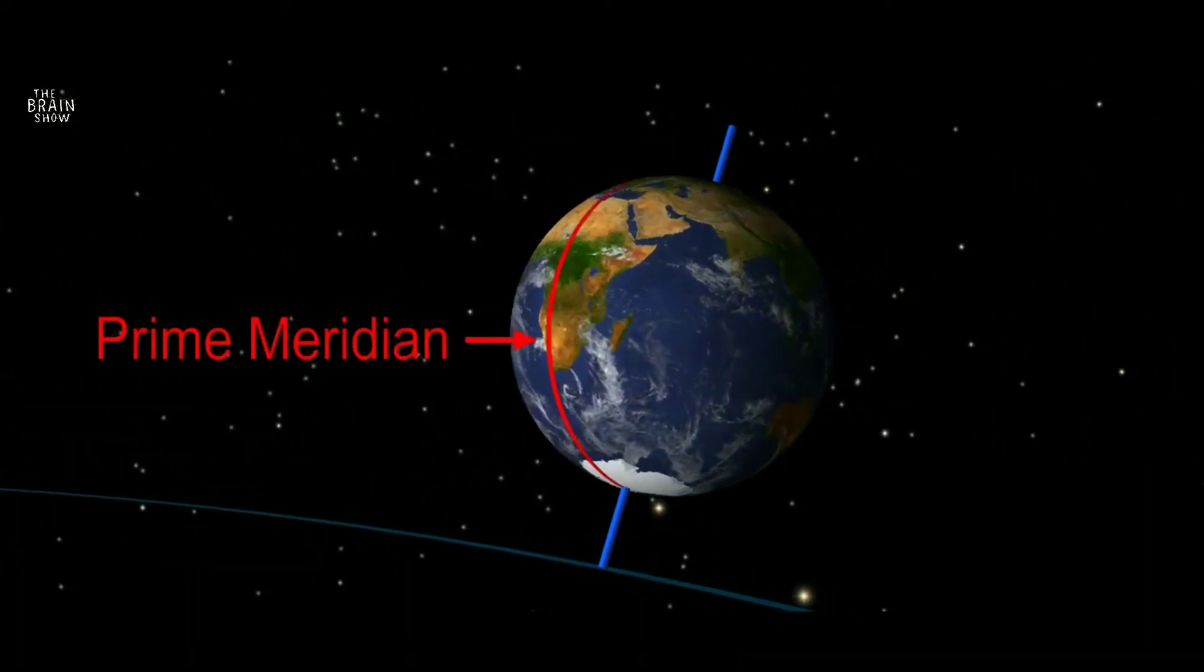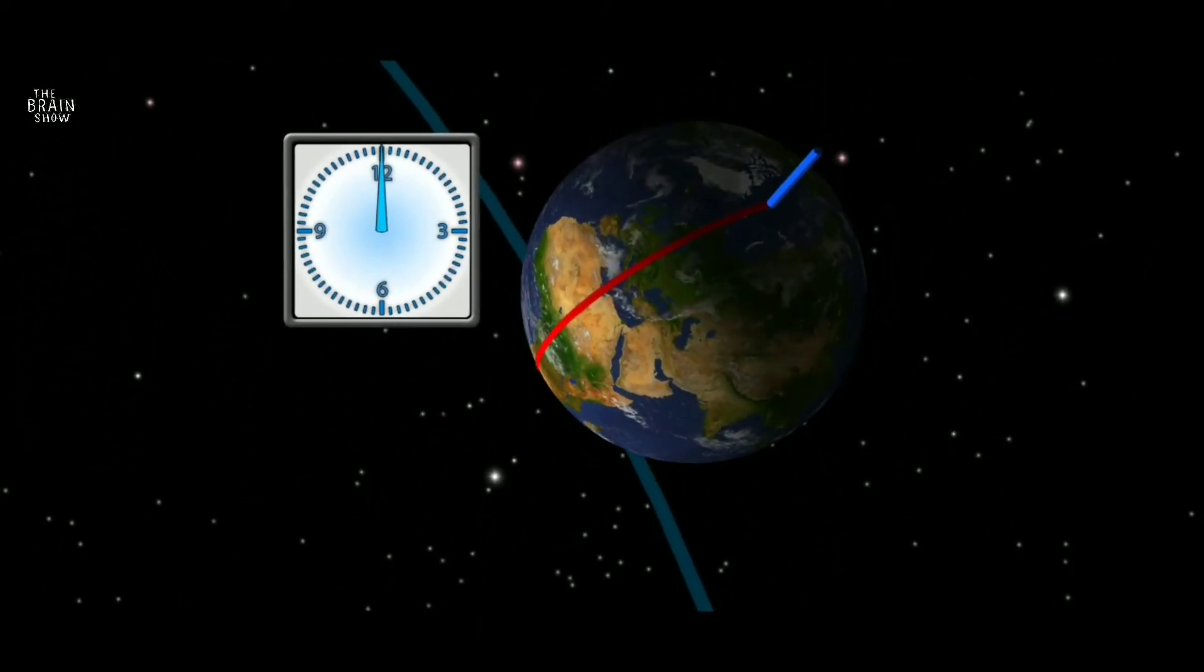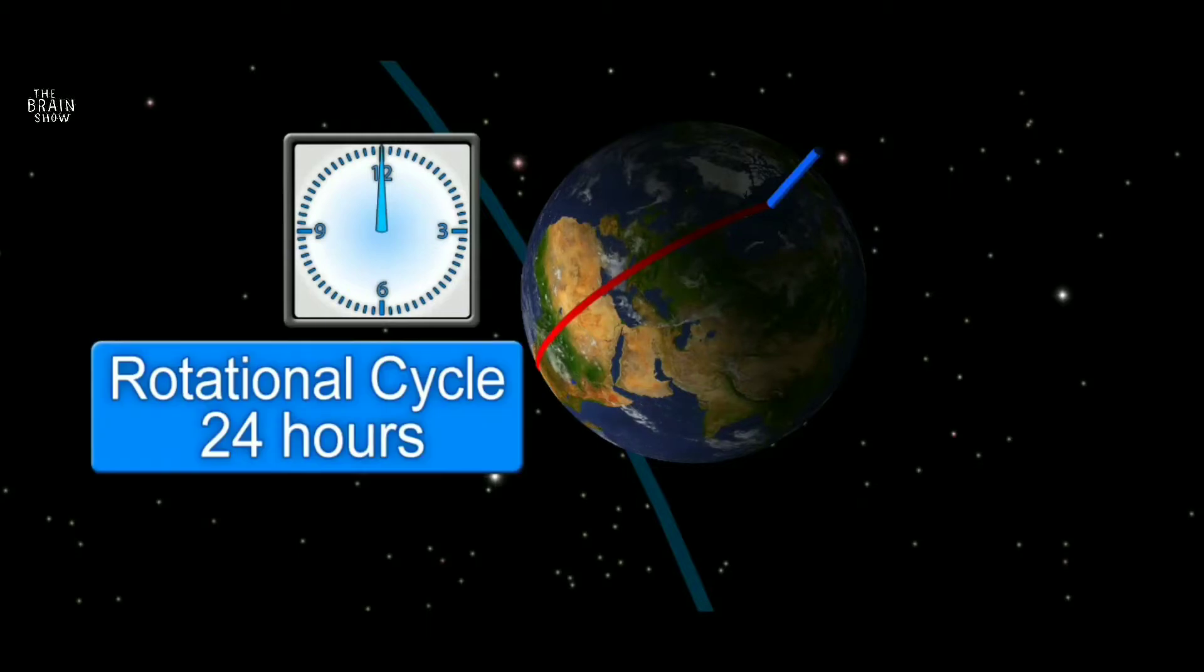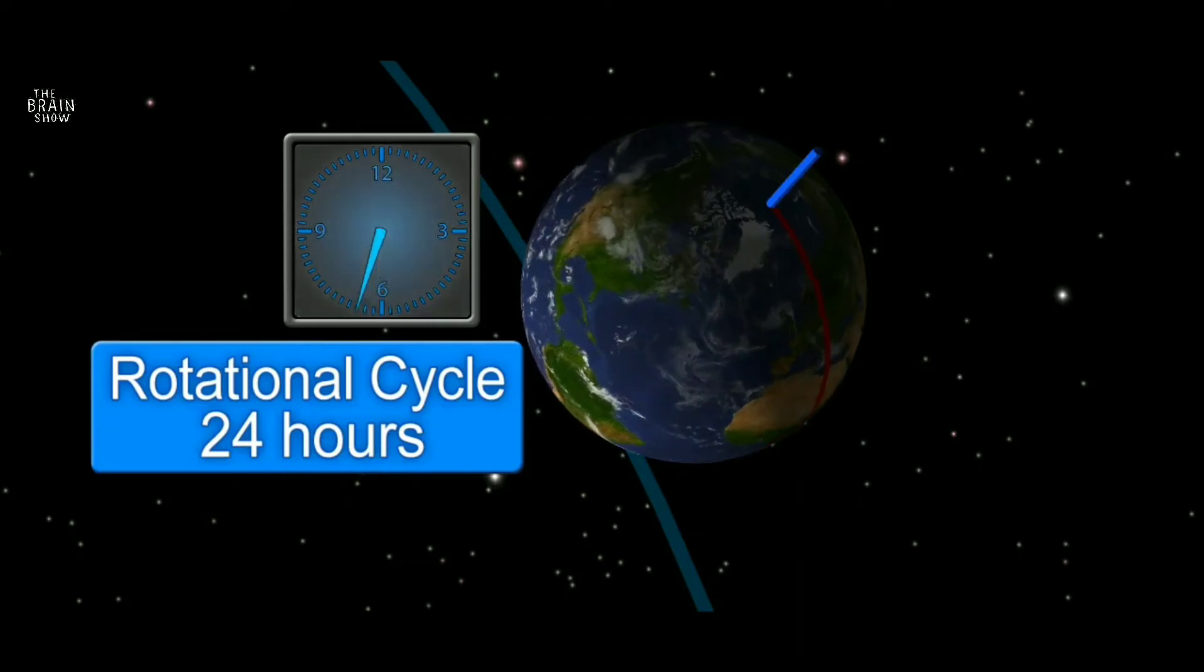Prime Meridian shows the beginning of the rotational cycle. The Earth's spin causes the cycle between day and night. It takes 24 hours for the Earth to rotate completely around its axis.